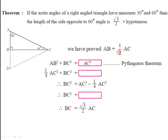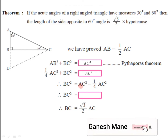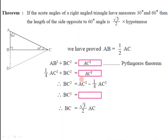So AB squared plus BC squared is equal to AC squared, as AC is the hypotenuse. Instead of AB we can write one half AC, so AB squared becomes 1 by 4 AC squared. Then BC squared is equal to AC squared minus 1 by 4 AC squared. Simplifying, we get BC squared is equal to 3 by 4 AC squared.